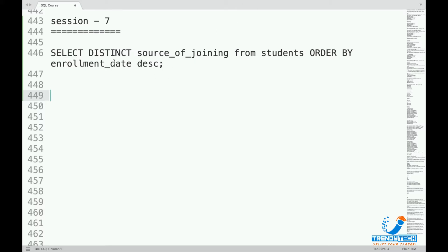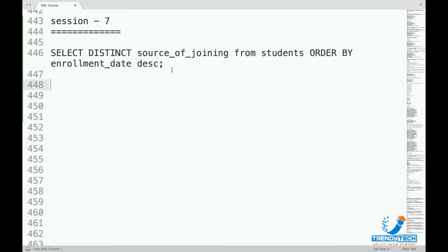The query is: SELECT DISTINCT source_of_joining FROM students ORDER BY enrollment_date DESC. That means we are doing DISTINCT, so both DISTINCT and ORDER BY are in the same query. Why won't this work? Let us see.